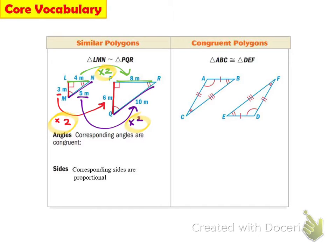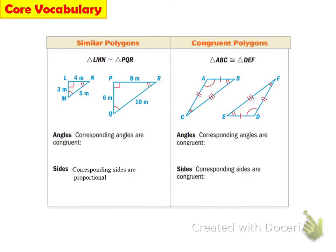This is similar figures, or similar polygons: congruent angles, proportional sides. Whereas congruent polygons — like to the right — the corresponding angles are congruent and the corresponding sides are congruent. You write that into your box. So the angles are the same idea, but the sides are where they differ. In a congruent polygon, the corresponding sides are congruent. But in a similar polygon, corresponding sides are proportional.